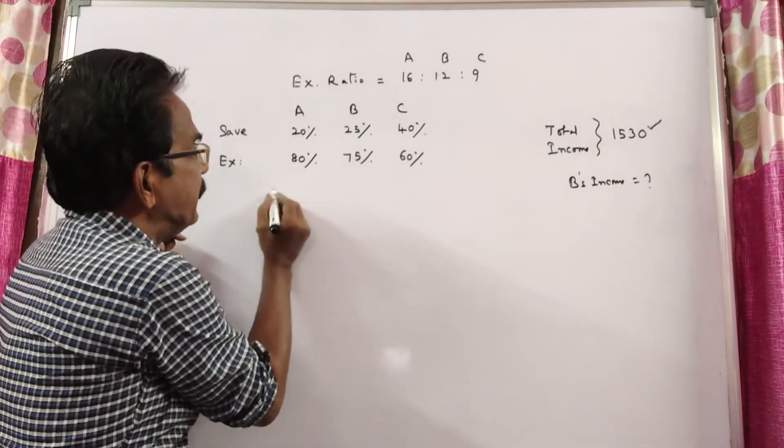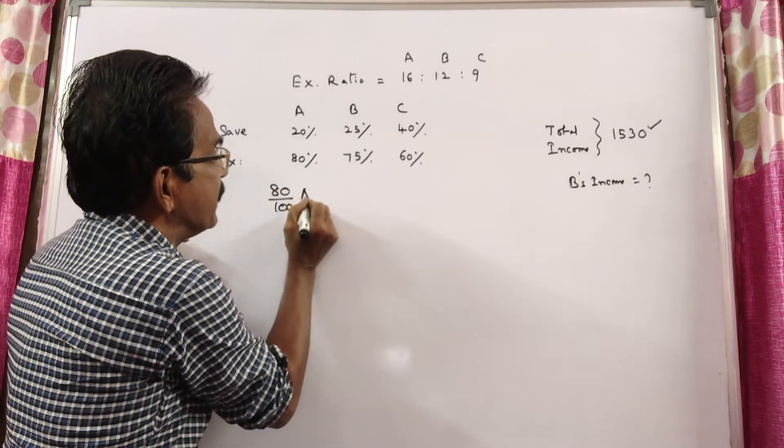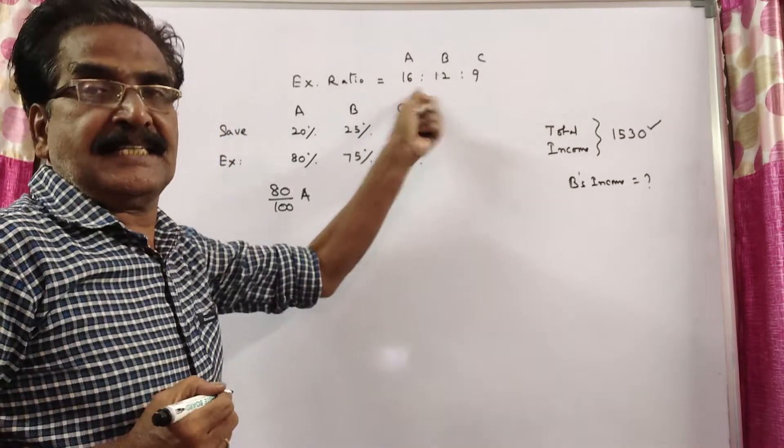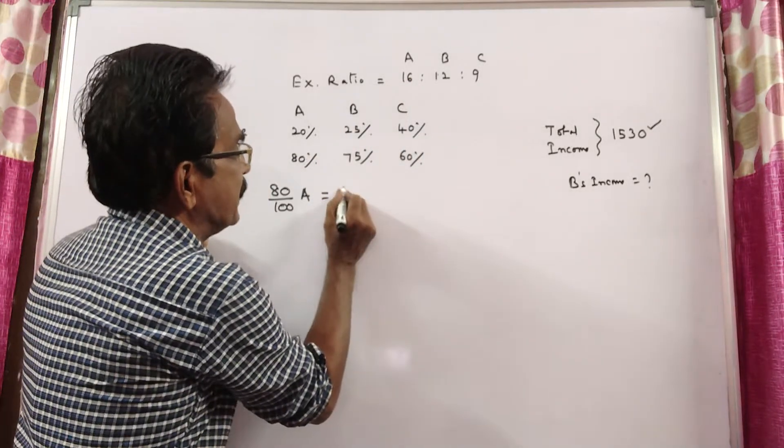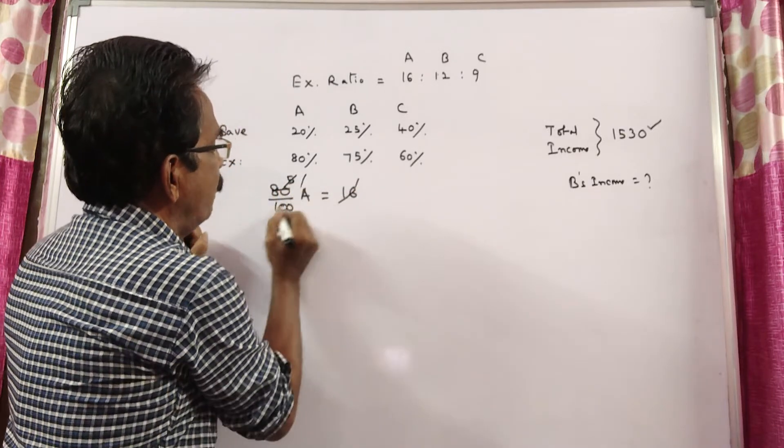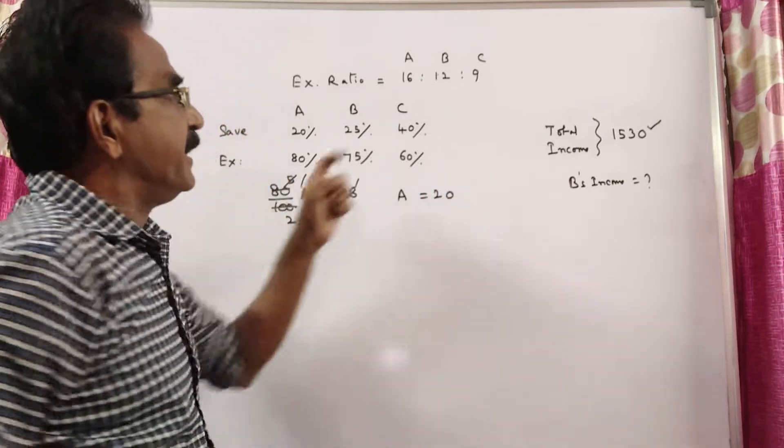A spends 80% of his income. His spending is 16. So 80% of A equals 16. Therefore, A equals 20.